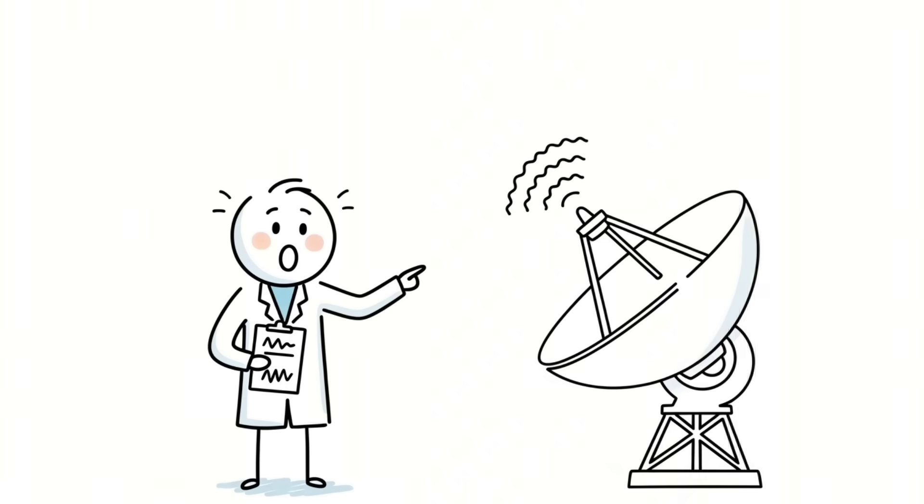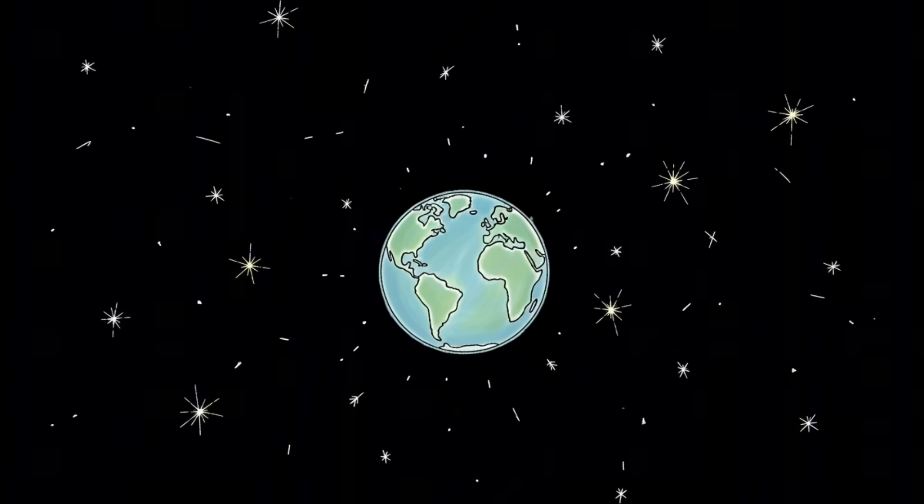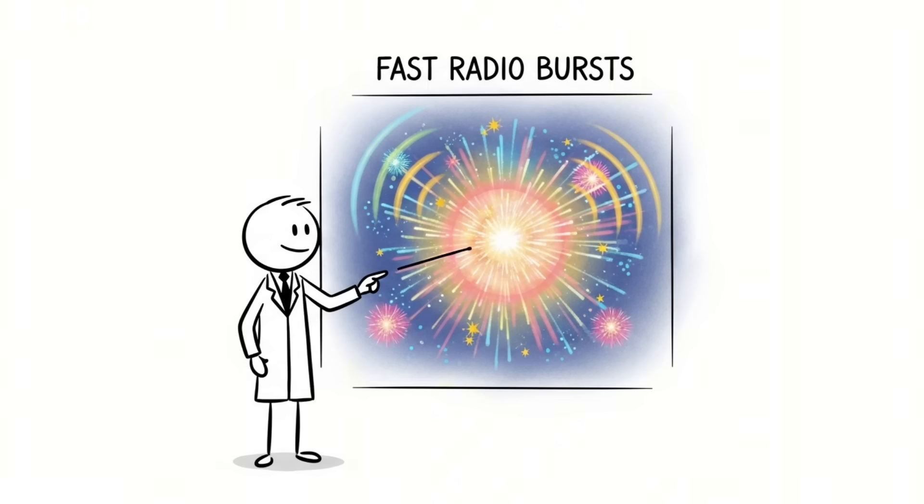Number seven, intergalactic scream. Imagine a flash of energy so powerful it releases more energy in one thousandth of a second than our sun does in an entire year. Now imagine these flashes are happening all the time, all over the universe. These are fast radio bursts, and it was first discovered by Duncan Lorimer in 2007.